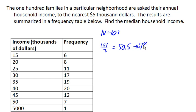And just like we did before, we can start counting up from the bottom. And since the bottom part of the data didn't change, we already know that the 51st piece of data is in this category. And so the 51st piece of data is 35,000.